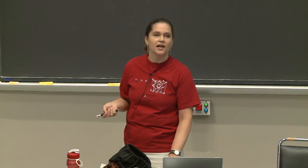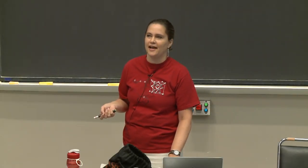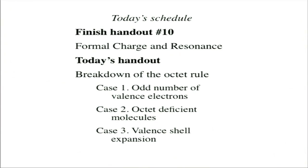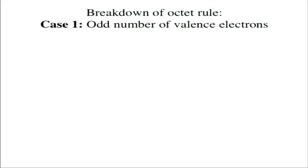So now we go on to the breakdown of the octet rule. We've established the octet rule, and now we're going to shake it all up and see its flaws. Case one: we're going to consider what happens when you have an odd number of valence electrons.